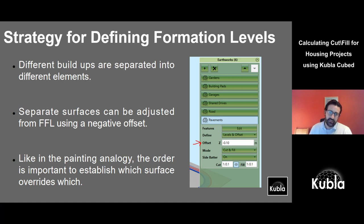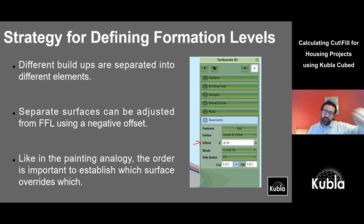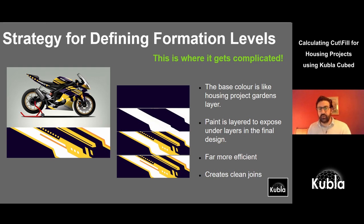One slight advantage of separating elements: if there are problems building the TINs — which can happen in very complicated projects with 50 building plots — it will report which element has the problem. Order also matters: elements in the same phase can override each other. In housing projects this works to your advantage because you can do the gardens as one large area and put the building pads on top — the building pads will override the garden elevations, saving a lot of time.